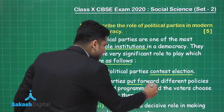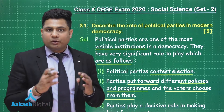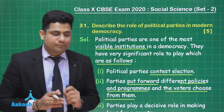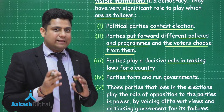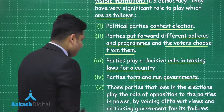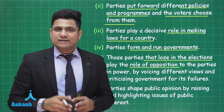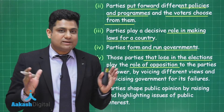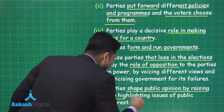Second, they put forward different policies and programs, and the voters choose from them. Among the given set of policies and programs, the people of a particular nation choose which political party will form the government. Third, they play a decisive role in making laws for a country. When elected, they form a decisive role in making laws for that nation. Fourth, political parties form and run the government. Fifth, those parties that lose in the election play the role of opposition, criticizing the working government and creating checks and balances on the ruling party. Sixth, they shape public opinion by raising and highlighting issues of public interest.